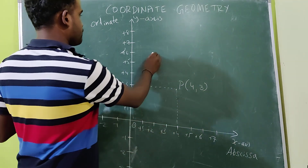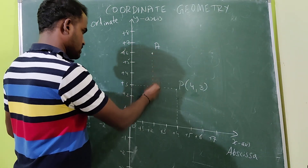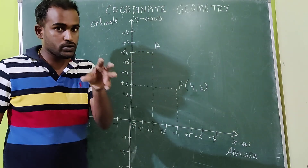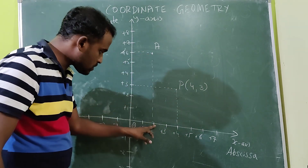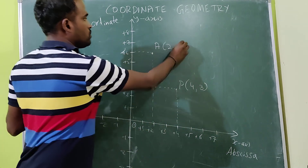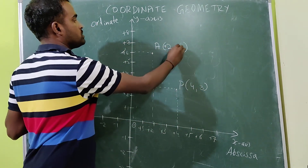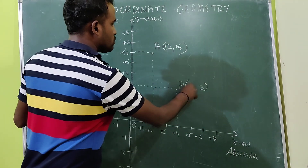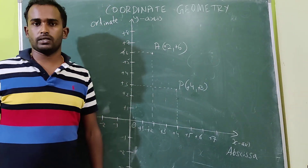Here consider one point A. Always write the x-coordinate first. Here x equals 2, y equals 6. So point A is (+2, +6). Here x equals +4, y equals +3.